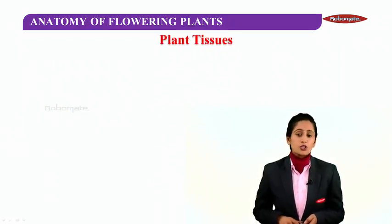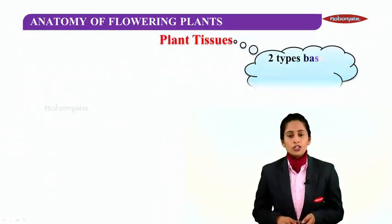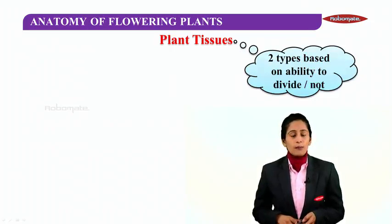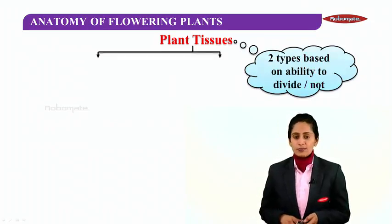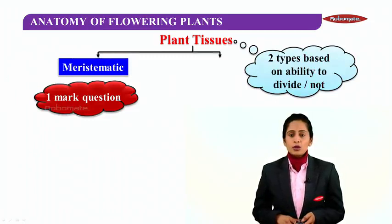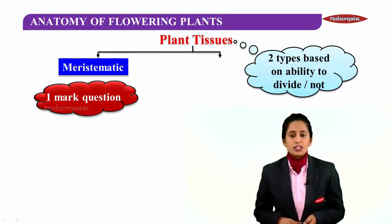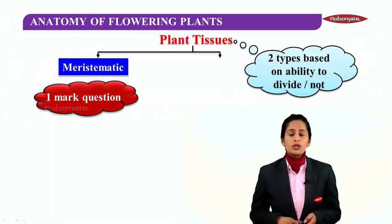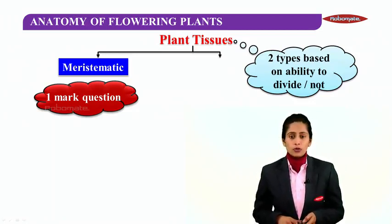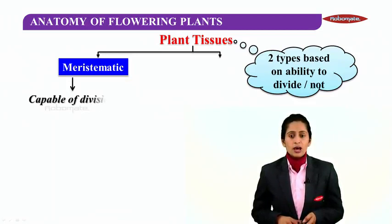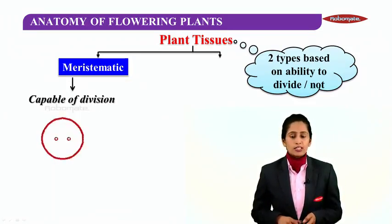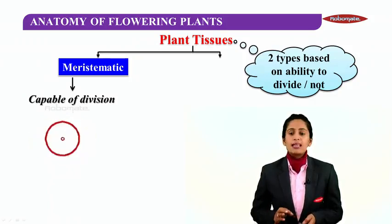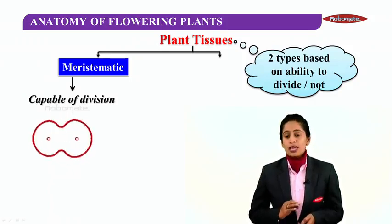The first type is meristems — tissues which have the capacity to divide. This is another question often asked in board exams. Meristems are those tissues which are capable of dividing; they are constantly undergoing division and have no other function other than dividing.